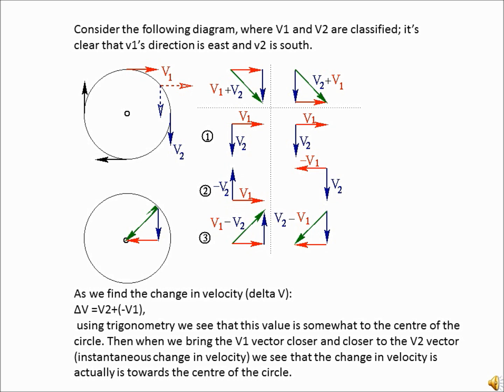To find out how vector 1 turned into vector 2, we can find the delta V of the two vectors, using triangles as shown. When we look further into this, we can see that when V1 approaches V2, the change in V becomes closer and closer to pointing towards the center of the circle. So, it can be concluded that the instantaneous change in velocity, or when one vector approaches another, is always towards the center.